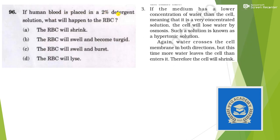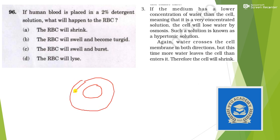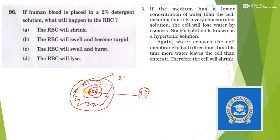Next: if blood is placed in a 2% detergent solution, what will happen to RBCs? The detergent contains 2% salt while RBCs contain around 0.9% salt — that means RBCs have more water content and the outer environment has less. Water will try to balance and come out from the RBC into the outer environment. The RBC will lose water and hence it will shrink. So the answer is option A.